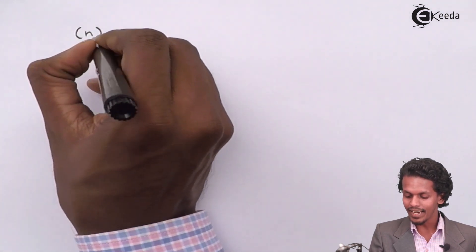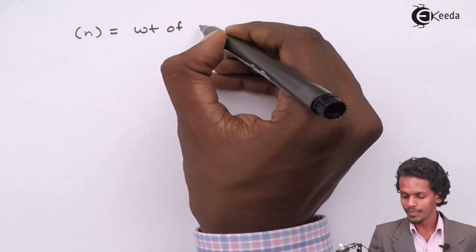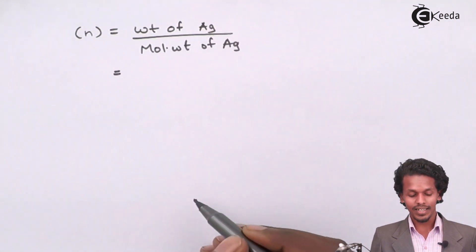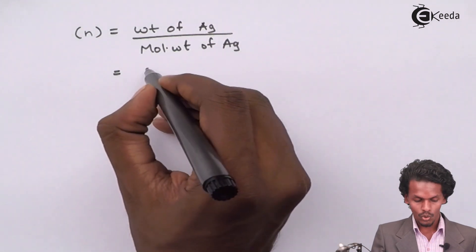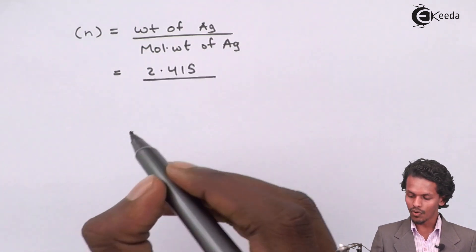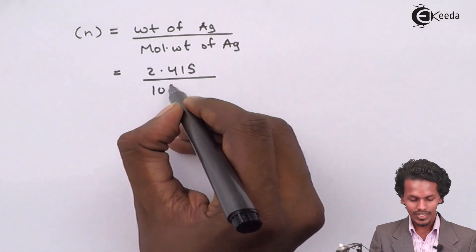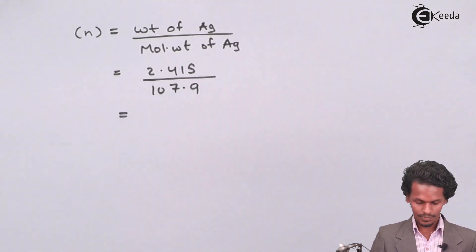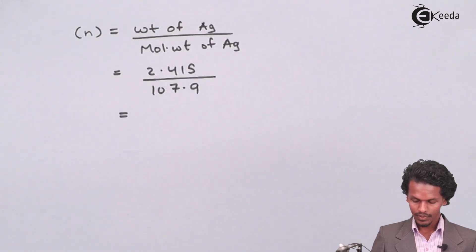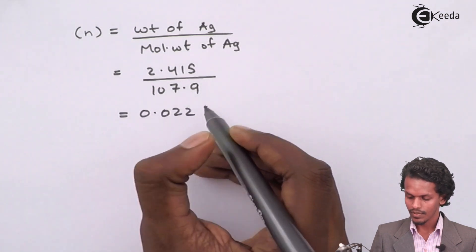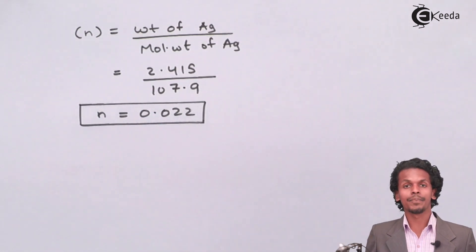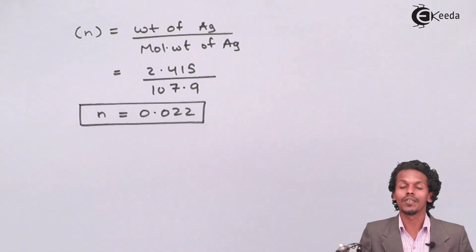The number of moles (n) = weight of silver / molecular weight of silver = 2.415 grams / 107.9 grams per mole. The number of moles of silver present in this amount is 0.022 moles.